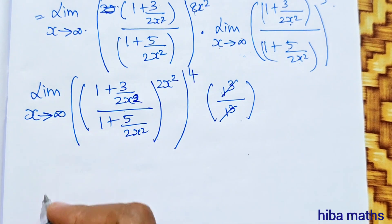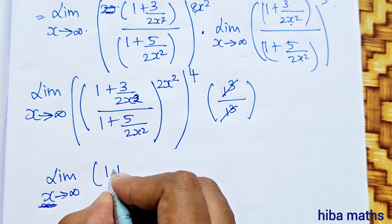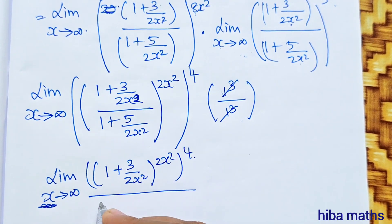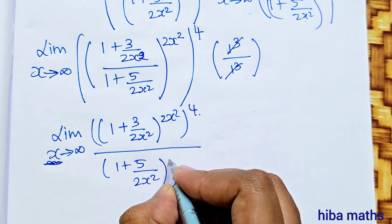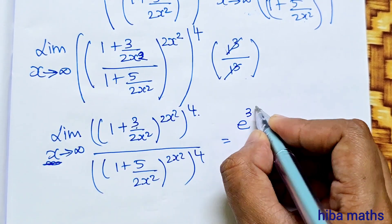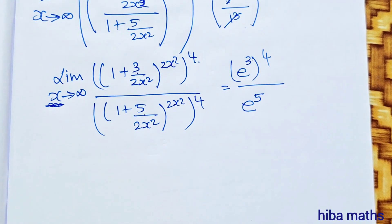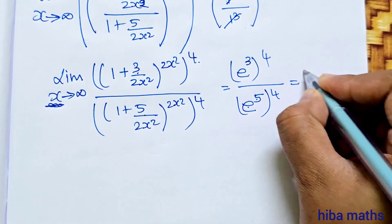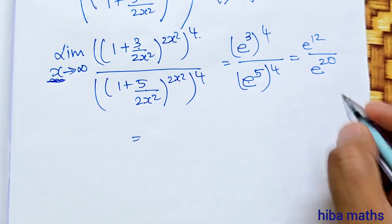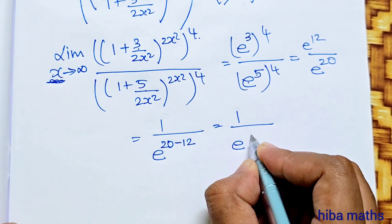Now we can simplify. Limit x turns to infinity, 1 plus 3 by 2x square, whole power 2x square, whole power 4, divided by 1 plus 5 by 2x square, whole power 2x square, whole power 4. Using the formula, each inner limit equals e power k, so we get e power 3, whole power 4, divided by e power 5, whole power 4. That is e power 12 divided by e power 20, which equals e power negative 8, or 1 by e power 8.